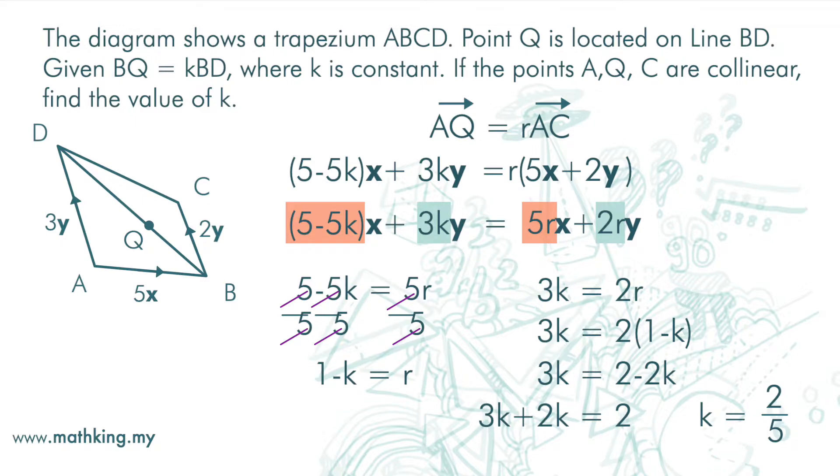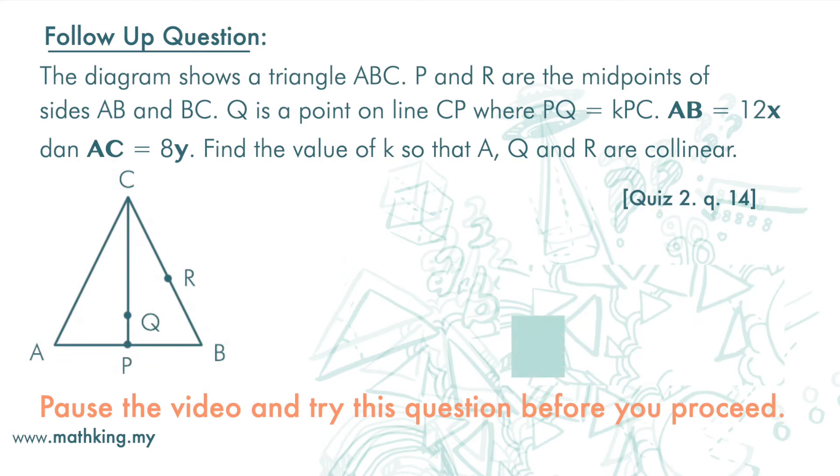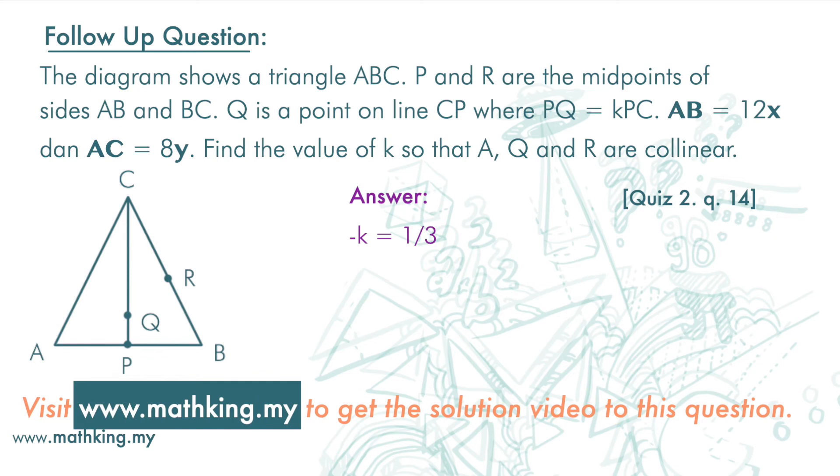What this means is that now let's look back at the diagram. When K equals 2 over 5, A, Q, and C will be collinear—they will form a straight line. Now we don't have to find R. We can, but we don't have to because it is not required by the question. Please do the quiz.